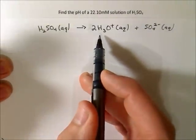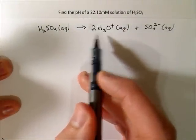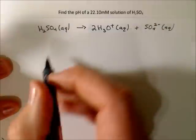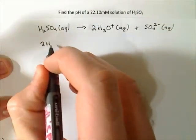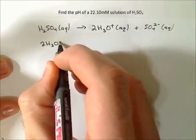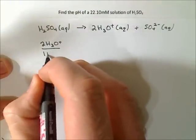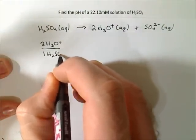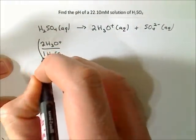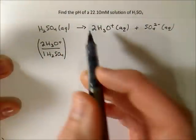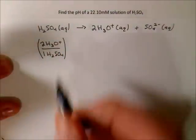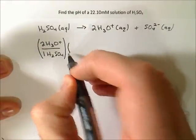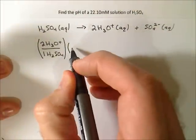So you can see there's two H3O+ per one H2SO4. So we write out our ratio. And then our molarity is 22.10 millimolar. So we need this to be in molar. So let's convert it to molar.